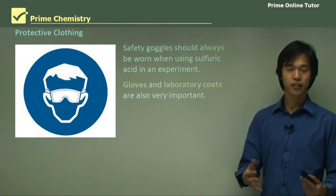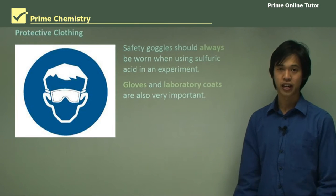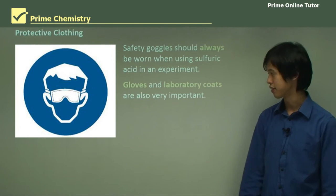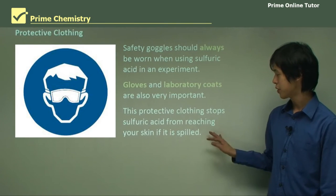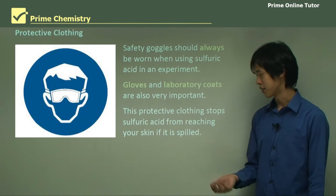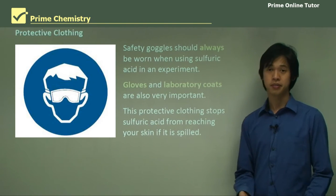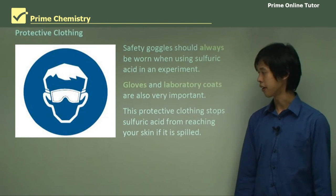Because if you get it on your skin, it can cause a lot of damage. This protective clothing stops sulfuric acid from reaching your skin if it's spilled — obviously, that's the whole point of protective clothing.